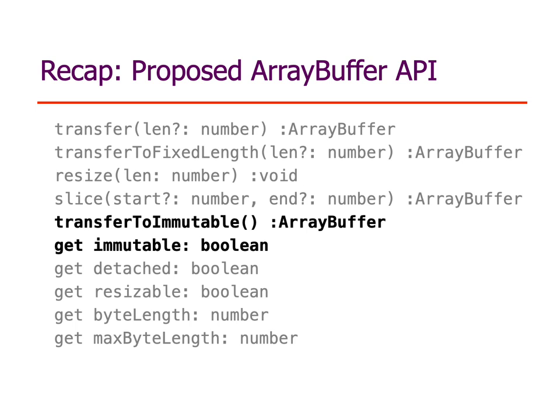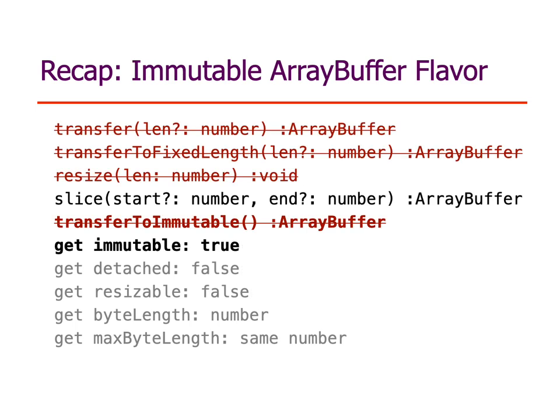The immutable flavor would be in addition to the existing detached and resizable flavors. The behavior of the immutable flavor is that its immutable accessor would return true, it's not detached and not detachable, it's not resizable, and its maxByteLength is the same as the byteLength. The slice method, which is a query-only method, would still work, but other methods that cause a change — including all the transfer methods — would throw an error.